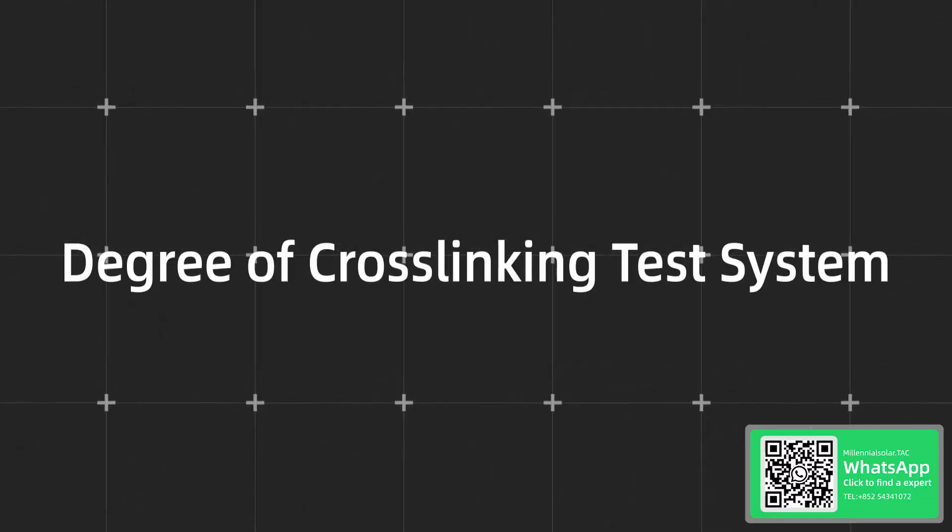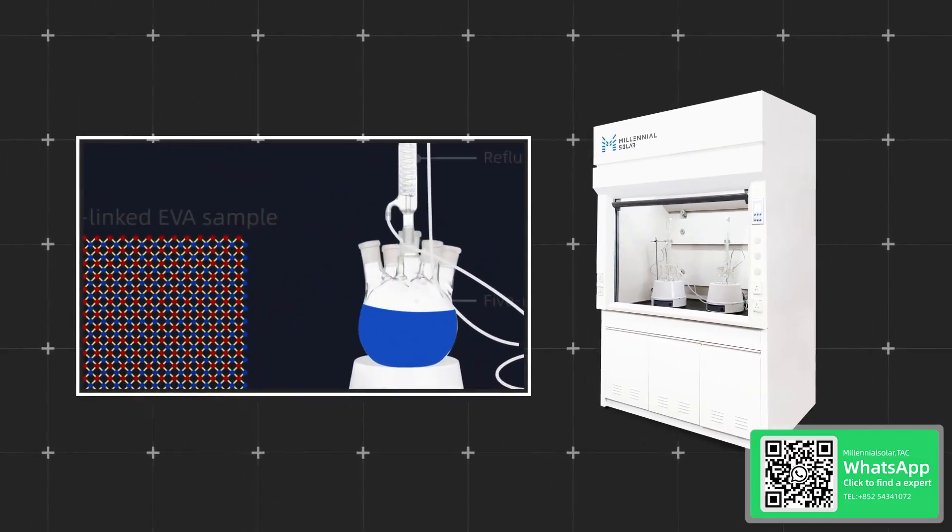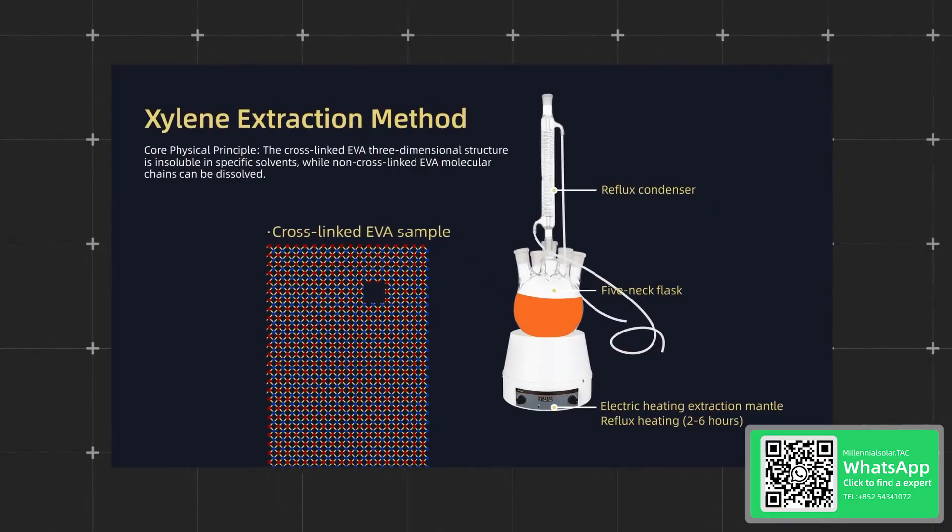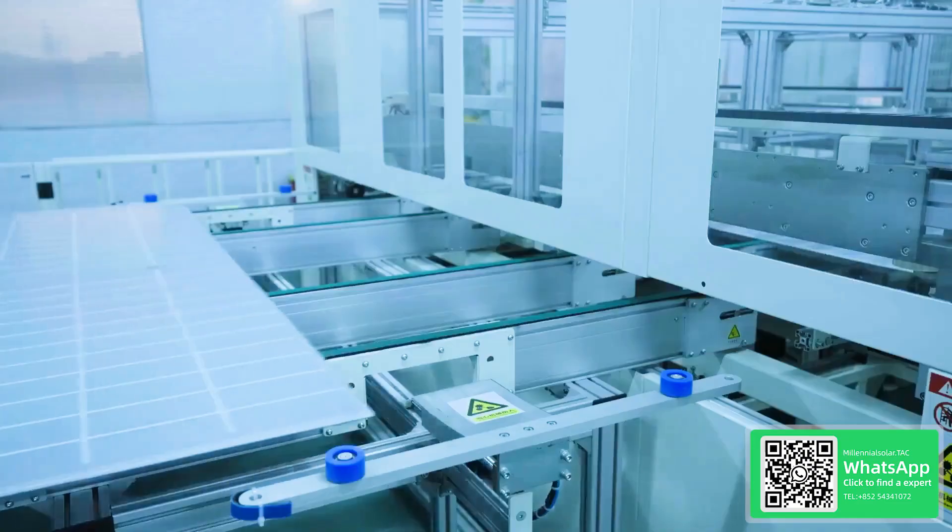The millennial degree of cross-linking test system employs a solvent extraction method, where samples are extracted in xylene solvent. By monitoring water vapor transmission rate and mass changes, it provides stability assurance for the incoming material inspection process of modules.